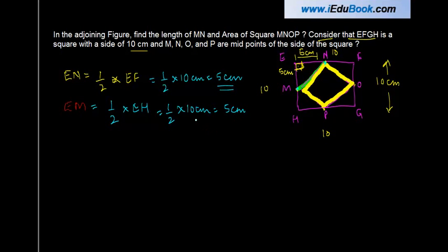Now in triangle EMN, consider this triangle. Let me highlight this for you. EMN, this triangle, is a right angle triangle. This is a square and all the sides of the square meet each other at right angles, so this is a right angle.